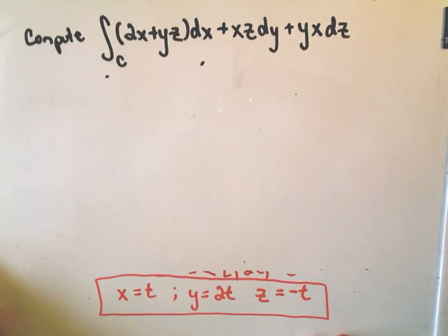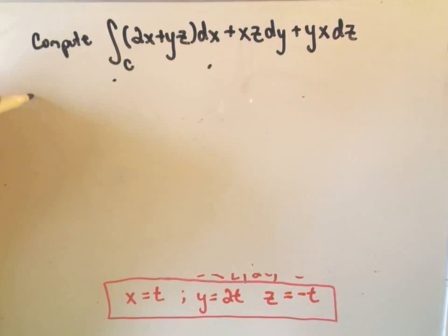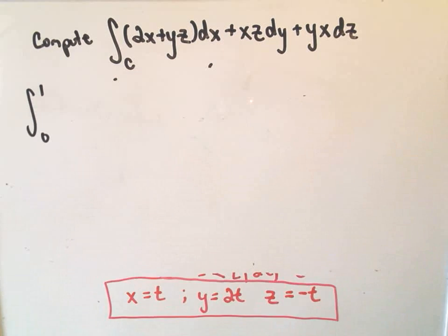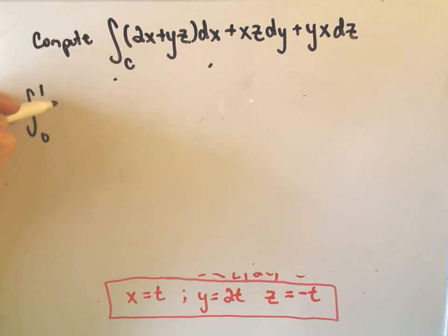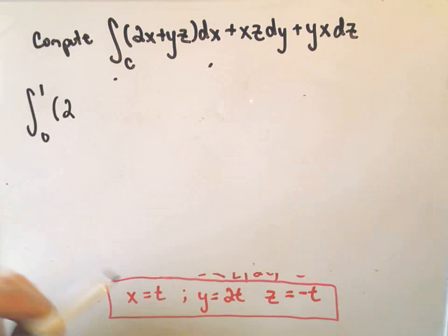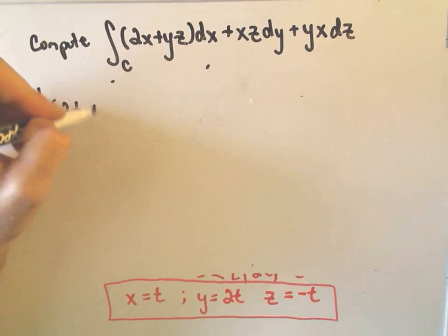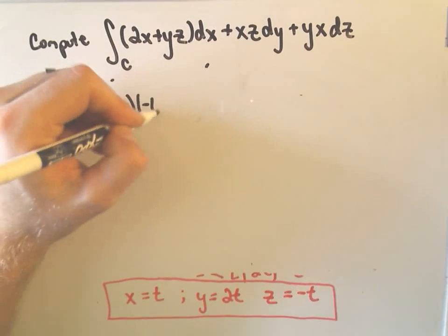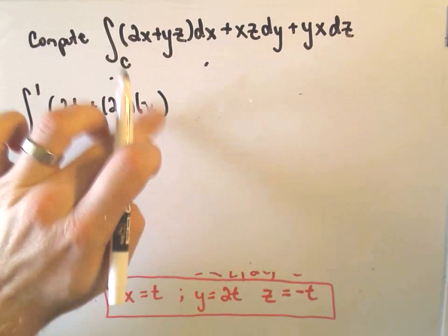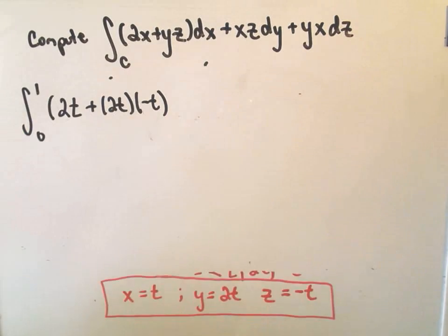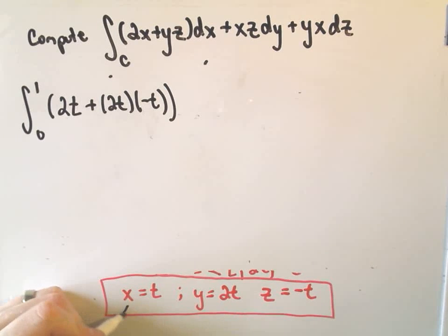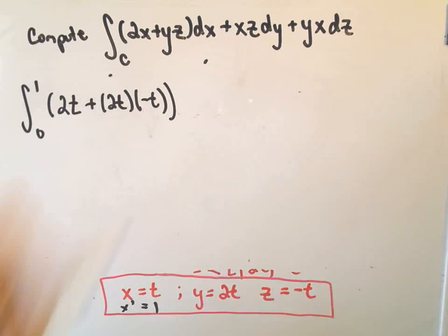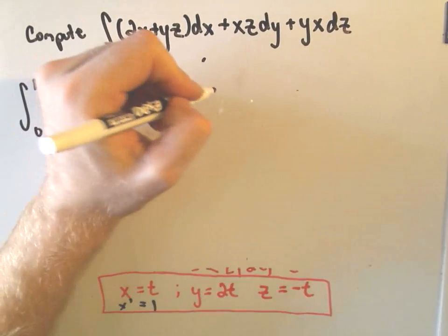Okay, so all I'm doing now is we're going to compute this integral. Again, we compute it from 0 to 1, and all we have to do is just start replacing. So it says we get 2x. Again, we're replacing x with t, so we'll get 2t plus y times z. So that's 2t times negative t. And it says we're multiplying all of that by dx. Well, if we take the derivative of x, or x prime, our x prime is simply going to equal 1 down here. So we'll multiply that by 1.